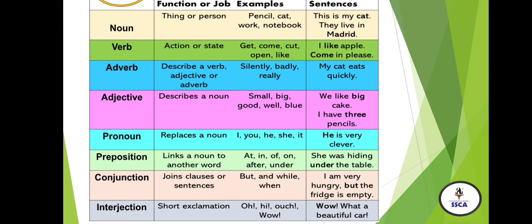The next one is adjective. Adjectives basically describe a noun. Examples: small, big, good, etc. Example sentences: 'We like big cake.' 'I have three pencils.' Here, 'big' describes the size and modifies the noun 'cake.' In the second sentence, 'three' is modifying the noun, telling us the quantity of pencils. This is about adjective.